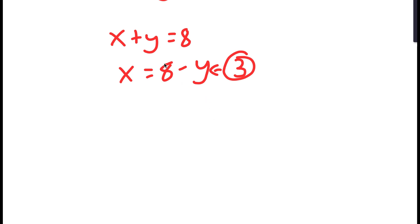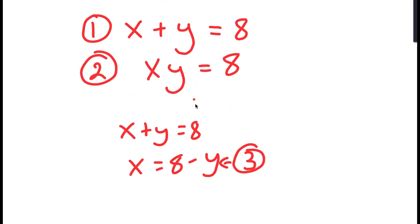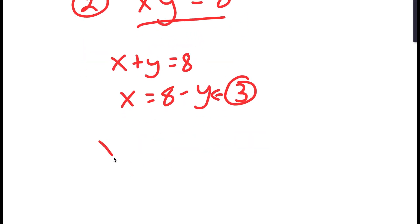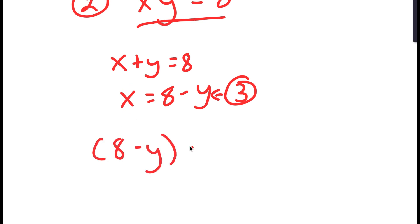So if x equals 8 minus y, then for x times y equals 8, I can plug in the value of x. So I get 8 minus y, times y, is equal to 8.